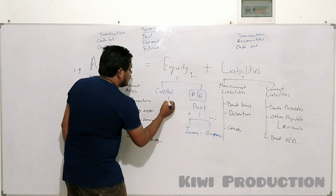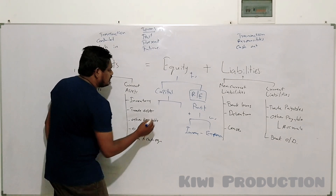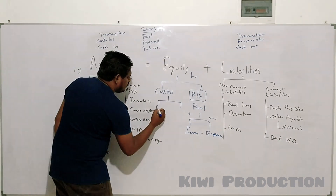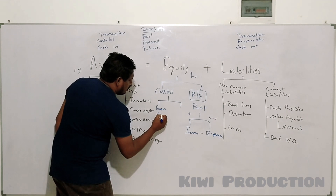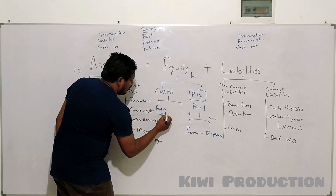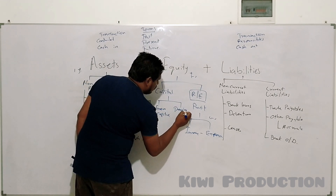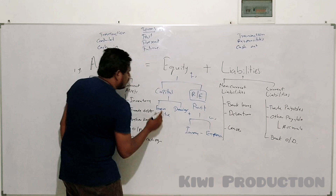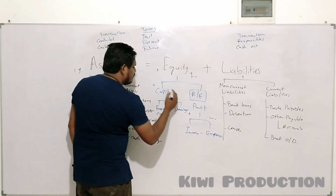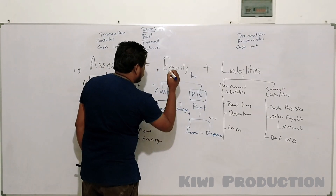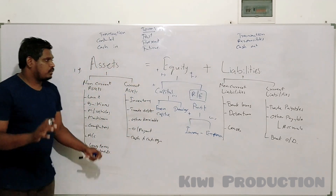Capital can be identified in two types: extra capital and drawings. Extra capital increases the capital and increases equity. Drawings decrease the capital and decrease equity.